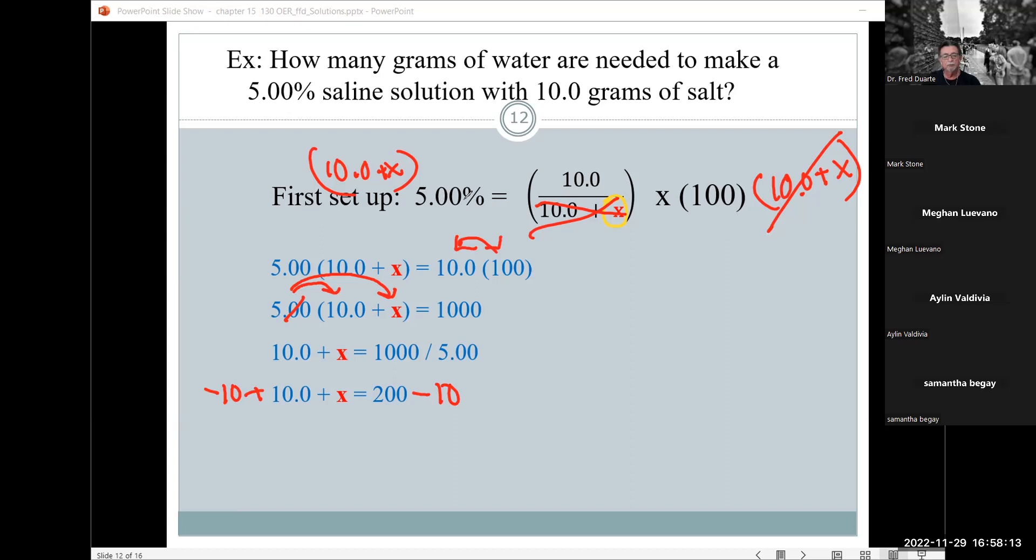Leaving you with 10 plus x equals 1000 over 5, 5.0. And so now you have this quantity 10 plus x equals 200. Now you want to solve for x, you subtract 10 on each side. All right. Now, keep in mind, we want to maintain our sig figs. So we've got three sig figs here, three here, three here, and three here, but you know, 100 is an exact number. So our answer should be in three sig format. And when we do that, 10's cancel, we got x is equal to 190, which is in two sig figs.